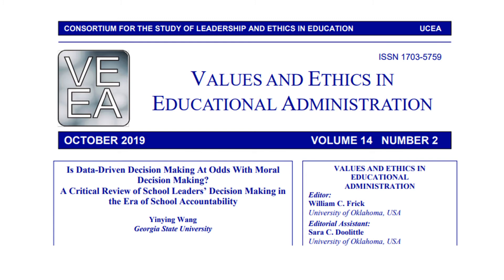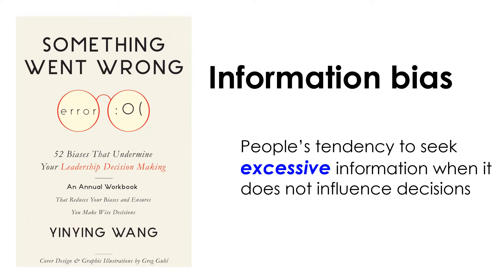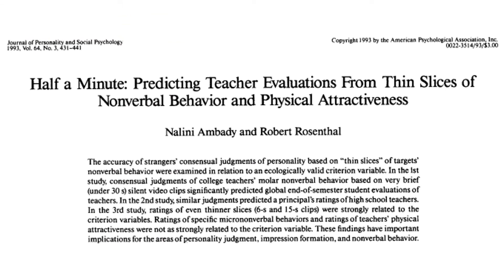That nagging feeling stayed with me until I started reading literature in psychology and neuroscience. From psychology literature, I learned about information bias — people's tendency to seek excessive information when it does not influence decisions. We use less information than we think to form our judgments; more information is not always better. In a study of teacher evaluation, a principal's ratings of high school teachers' job evaluation were significantly predicted by judgments of teachers' nonverbal behavior based on short, silent video clips under 30 seconds.